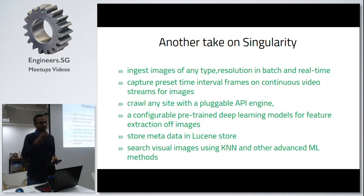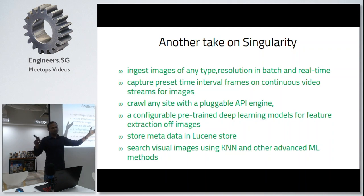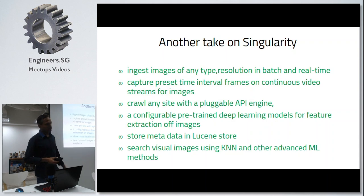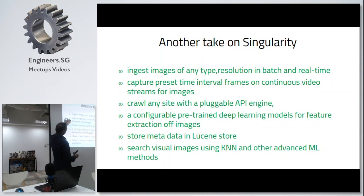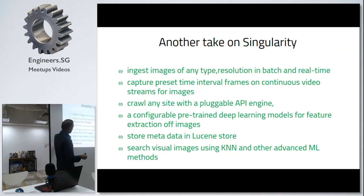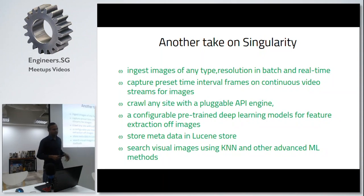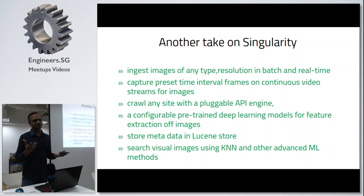Another take on singularity: are you aware of Solr/Lucene search engine? We can attempt to build something similar to Solr and Lucene for images — it should be able to ingest any image, any resolution, in batch or real time, and even take video feeds. It should have a pluggable crawler engine that can crawl any website or API to get images. It should support pluggable pre-trained models, store all metadata in Lucene, and expose a search API. It's essentially a Solr for images, because Solr does text search — so why not adopt it for image search?